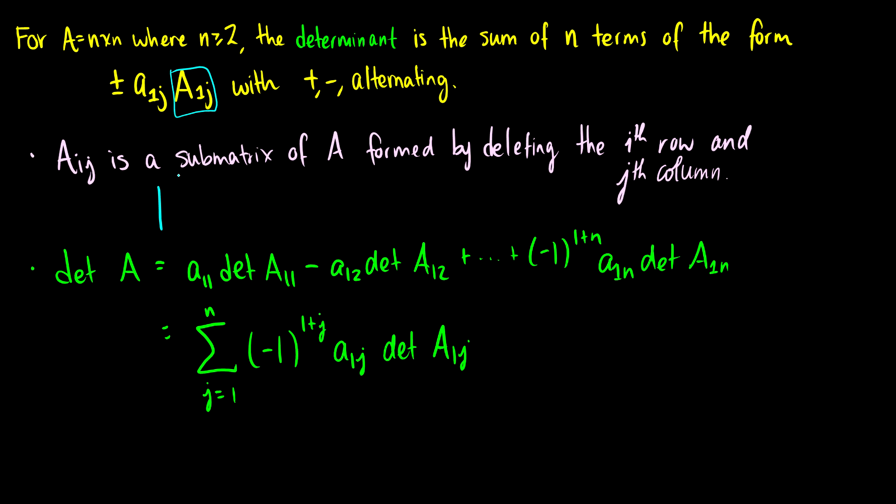So Aij is the submatrix formed by deleting the ith row and the jth column. So for instance, let's say we have A11, A12, A13. I'm going to fill in all these entries here. So this would be 32, and A12, A13. So a matrix, so that's A.